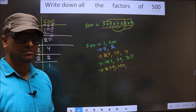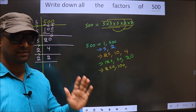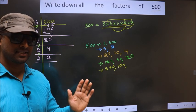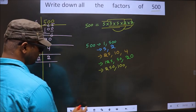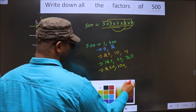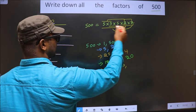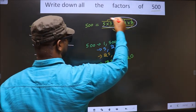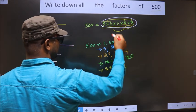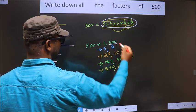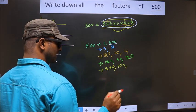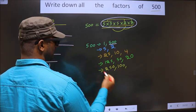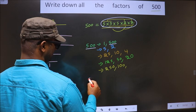Now take the combination of all 5 numbers. Here we have only 5 numbers, and if we take all 5 together we get 500 itself. Thus, these are all the factors of 500.